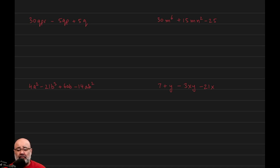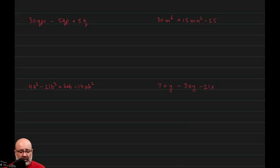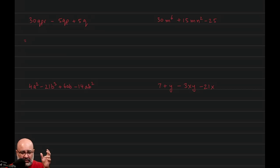Now you want to be very careful that you're reading the question carefully. If the question just asks what is the GCF and you factor the whole thing out, it would be wrong. If the question says to factor out the GCF and all you give me is the GCF, that is wrong as well. So if the question says factor out the GCF, you need to find the GCF and actually factor it out with parentheses, leaving behind what's left behind.